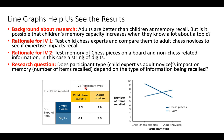Our first independent variable is participant type. We have two groups: child chess experts and adult chess novices — children who are amazing at chess, future chess masters, versus adults who maybe don't really know how to play chess. Our second variable is the type of item they're remembering. This is actually a real experiment — these data are not made up. The experimenter asked participants to remember either the layout of chess pieces on a chess board or a string of random digits.